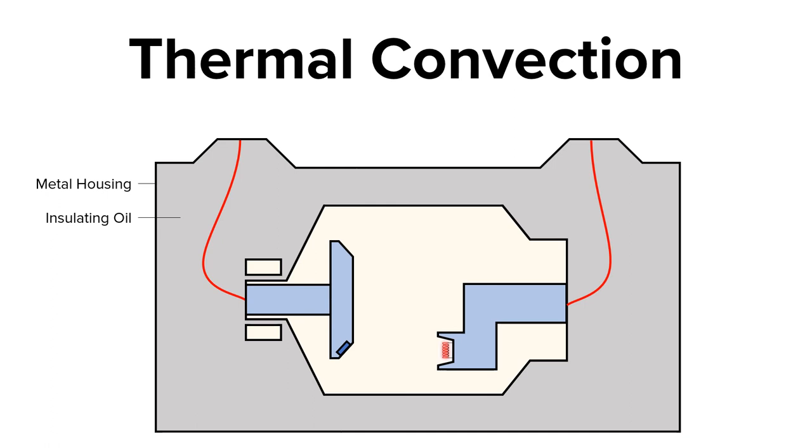The last way to remove heat from the x-ray tube is through thermal convection. Thermal convection is moving heat through air or liquid. For example, the heat that travels to the stator will dissipate into the insulating oil of the metal housing.